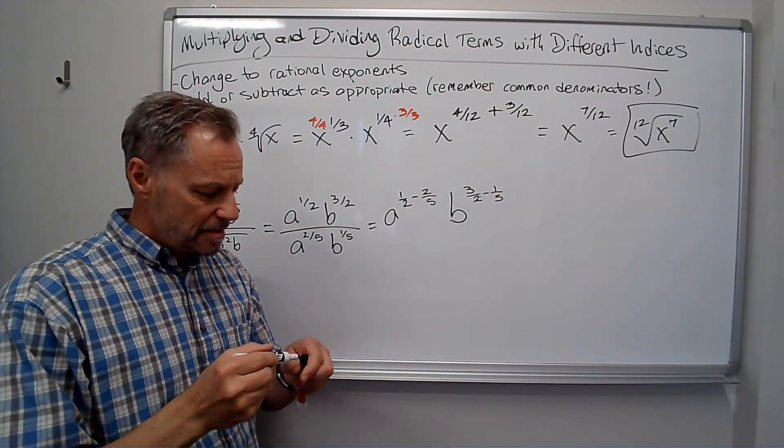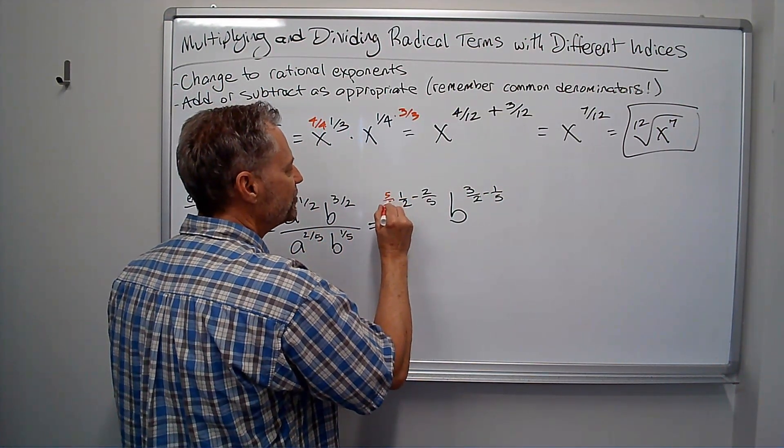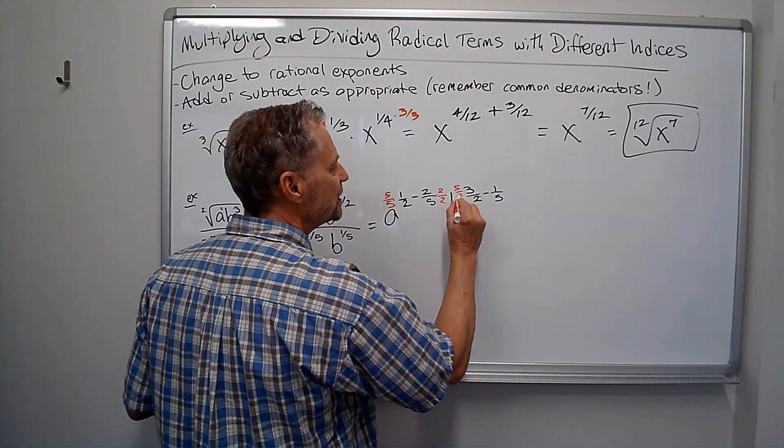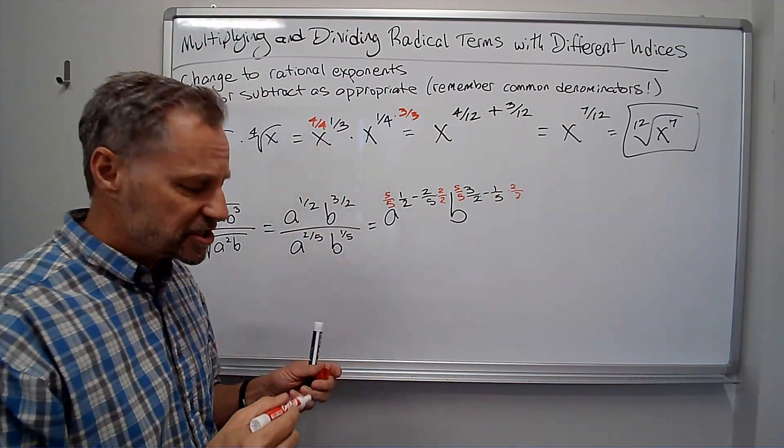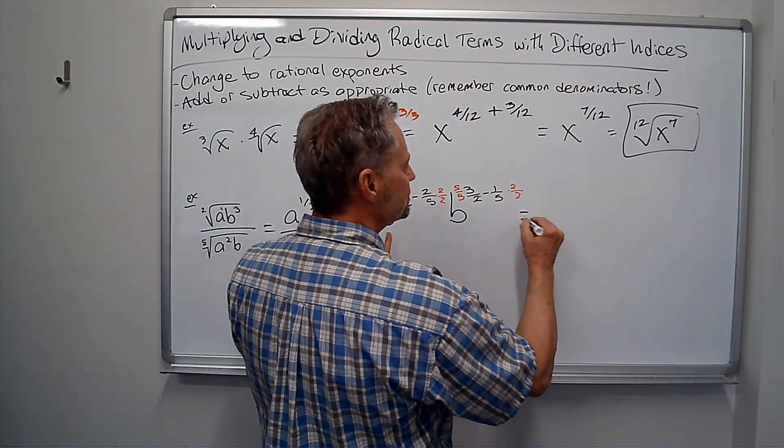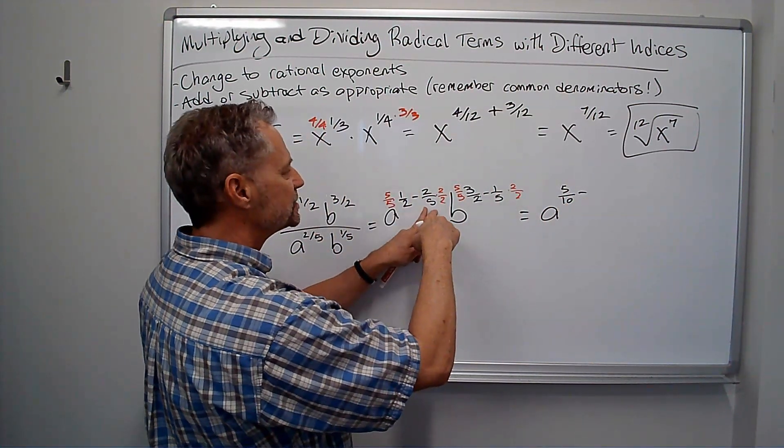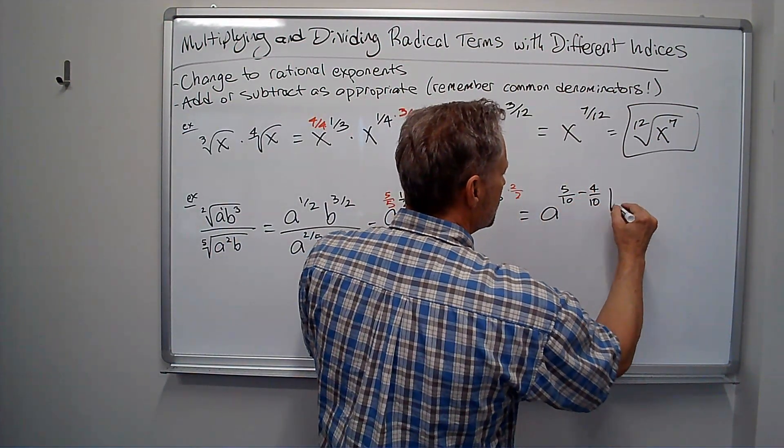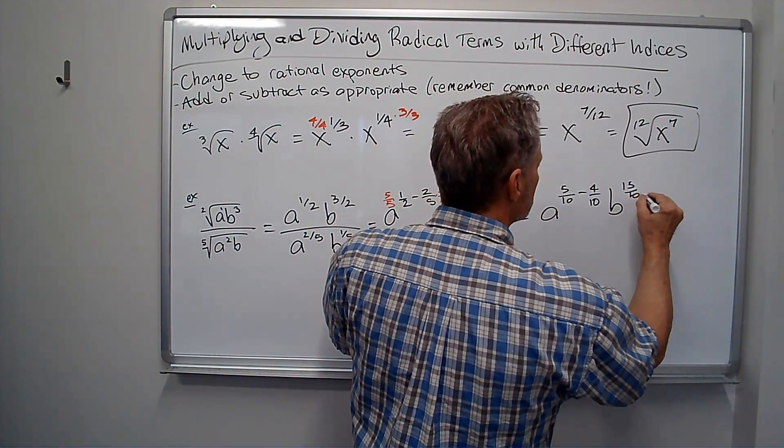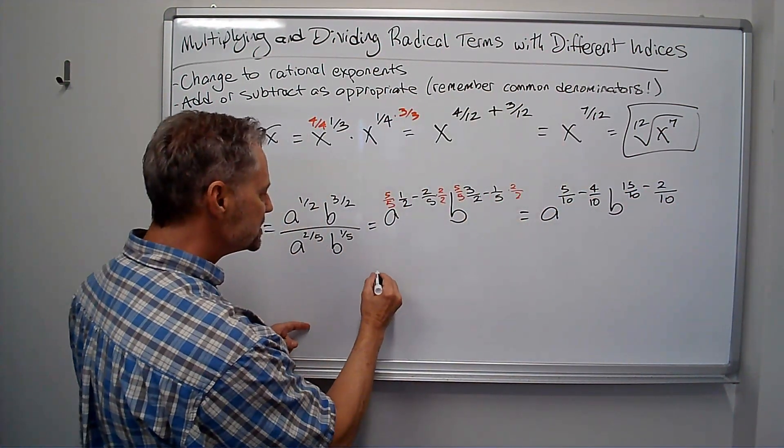And again, I need common denominators. Two and five both go into ten. So I multiply that by five over five, and that by two over two. I'm doing the same thing over here with the b's. Five over five, two over two. Getting all the denominators to be ten. I get a to the five-tenths minus four-tenths. And I get b to the fifteen-tenths minus two-tenths. We'll continue that on down here.